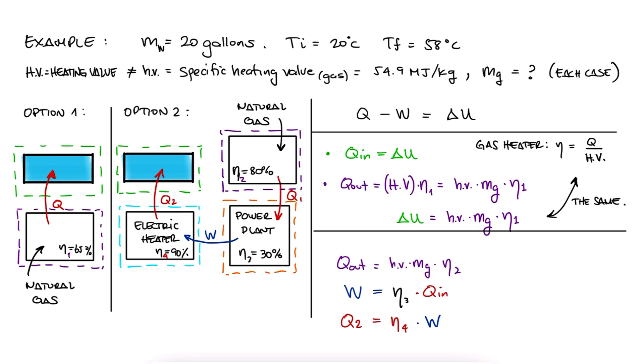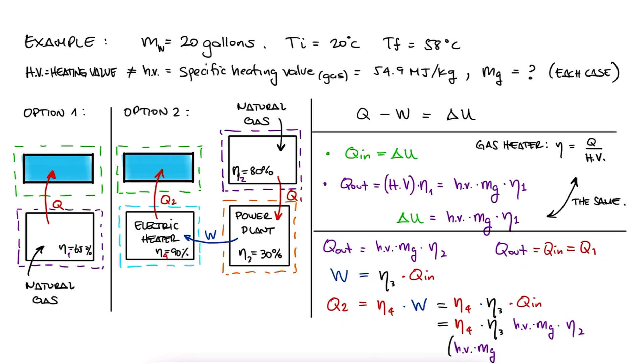Notice that if we substitute work from the second equation and heat out from the first equation, we have that the total heating value times the three efficiency values is equal to the heat transfer into the water. And remember that heat in or heat out are the magnitude of heat values. The signs only come into play when adding them to the energy conservation equation.